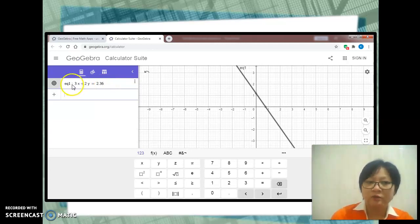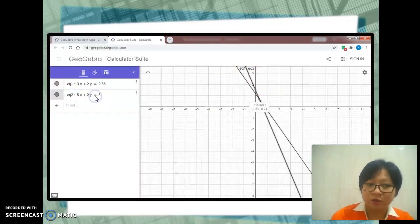GeoGebra will automatically label the equation as eq1, which means equation 1. The straight line graph will be labeled as eq1. Then type the second equation.